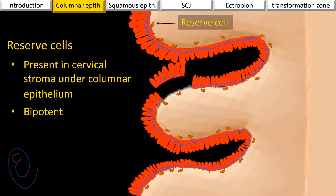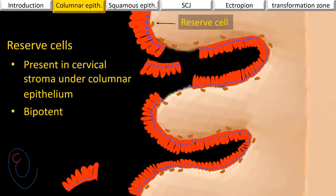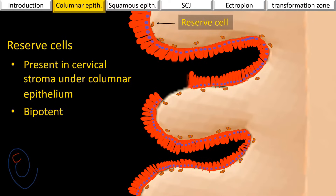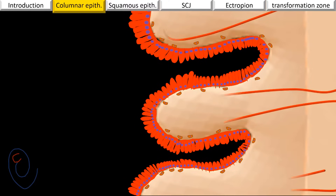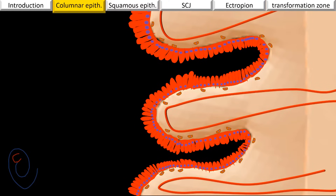The function of reserve cells is to divide and multiply, forming new columnar cells to replace degenerated ones. Reserve cells are bi-potent — they can form columnar epithelium, and under certain circumstances they can also form squamous epithelium. There are blood capillaries inside the villous part of the endocervix, and these blood vessels are separated from the surface by a single layer of columnar cells.